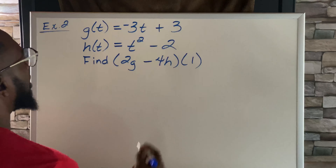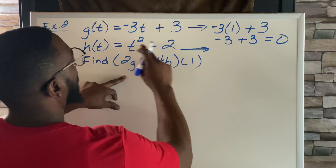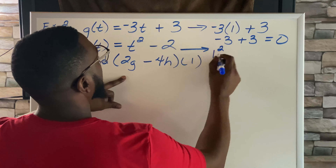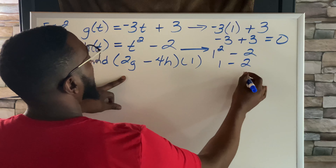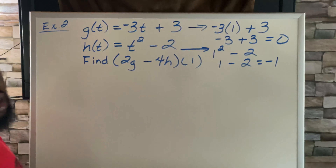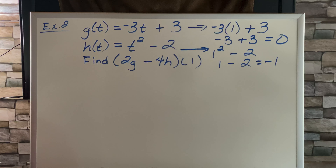Let's get started with g of t. We're going to say g of t equals negative 3 times 1 plus 3. Negative 3 times 1 is negative 3, plus 3 equals 0. So g of t is 0. For h of t, we have t squared minus 2, so 1 squared minus 2, which is 1 minus 2, which is negative 1.